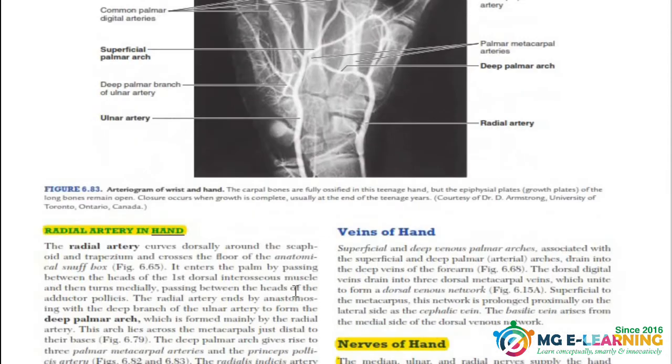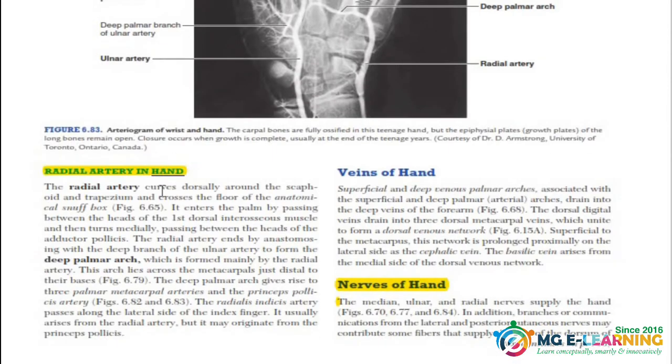We have another artery in the hand, and then the radial artery in the hand, which is again a scenario-based UQ.